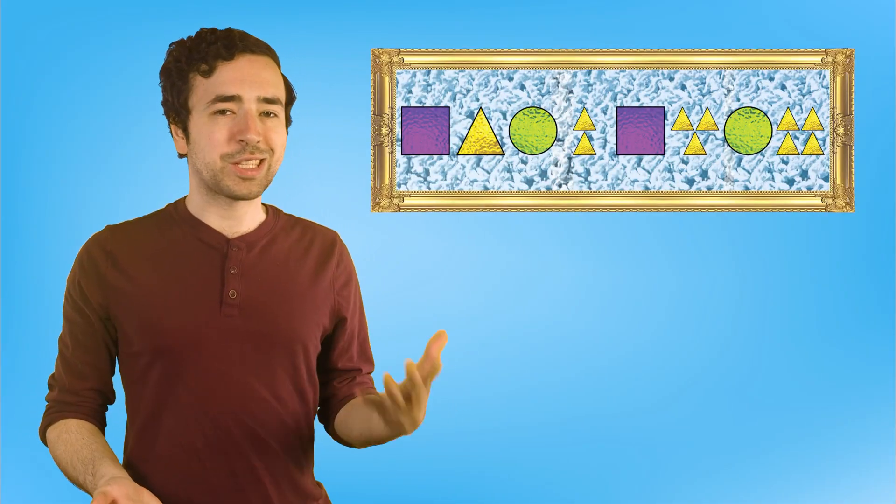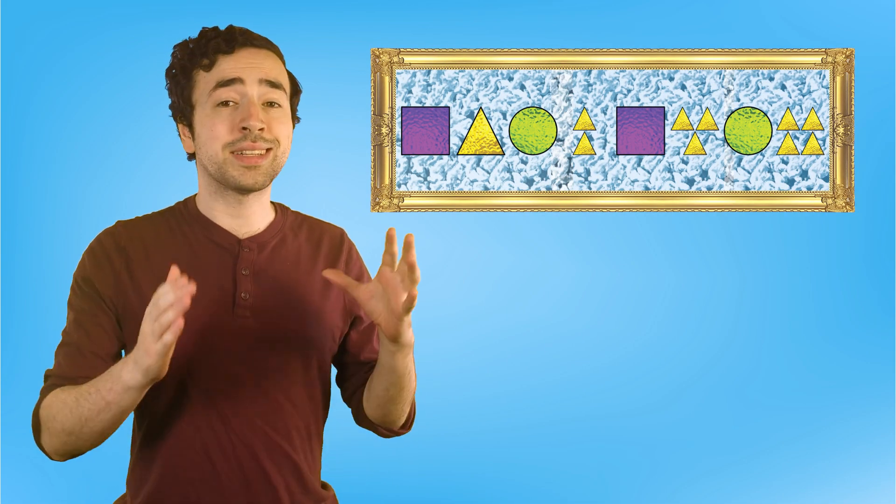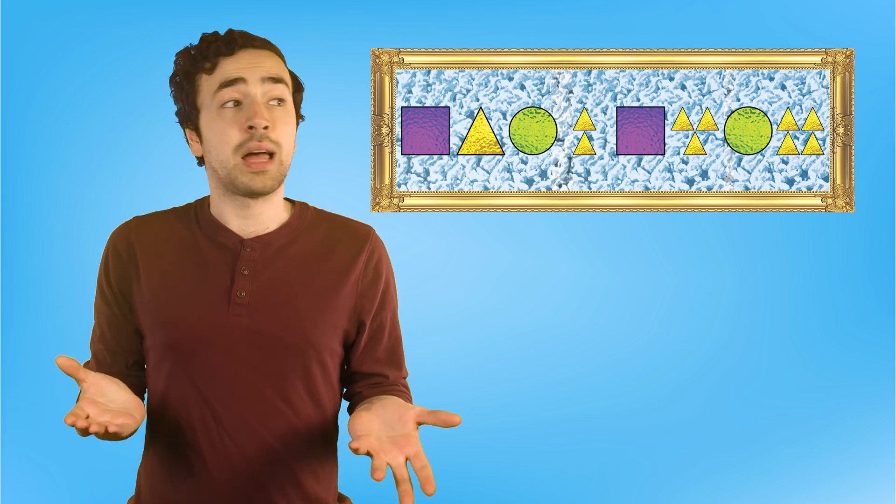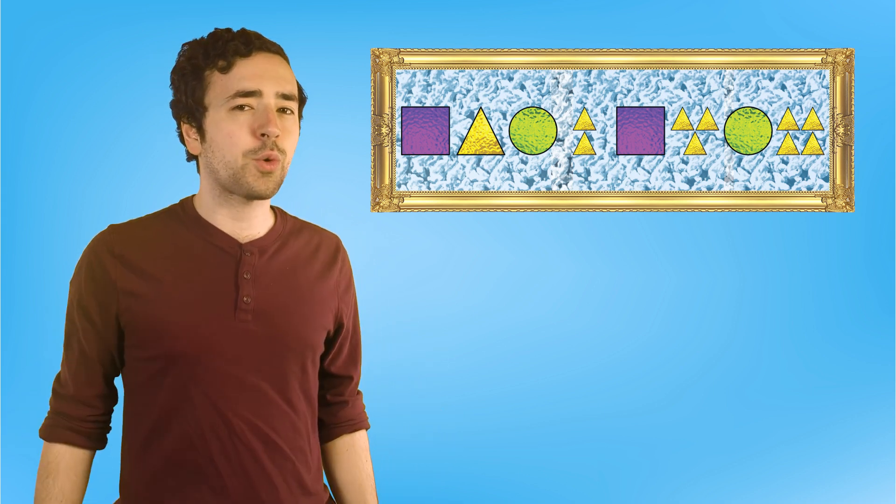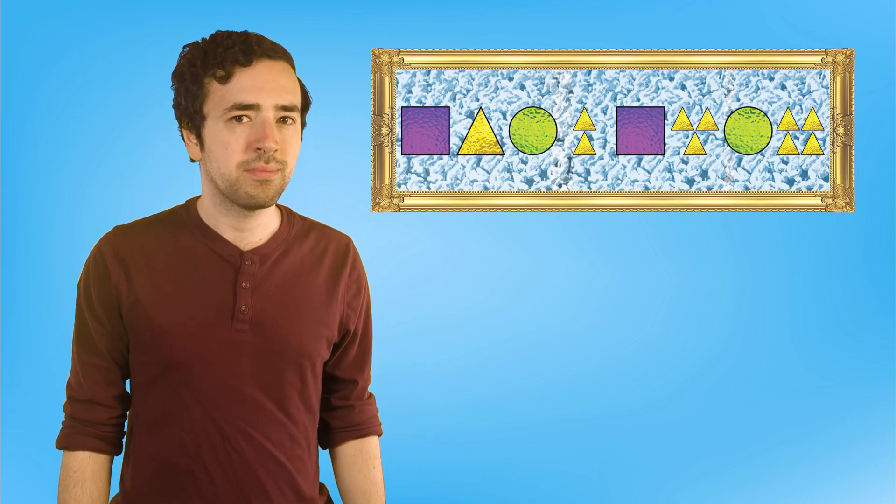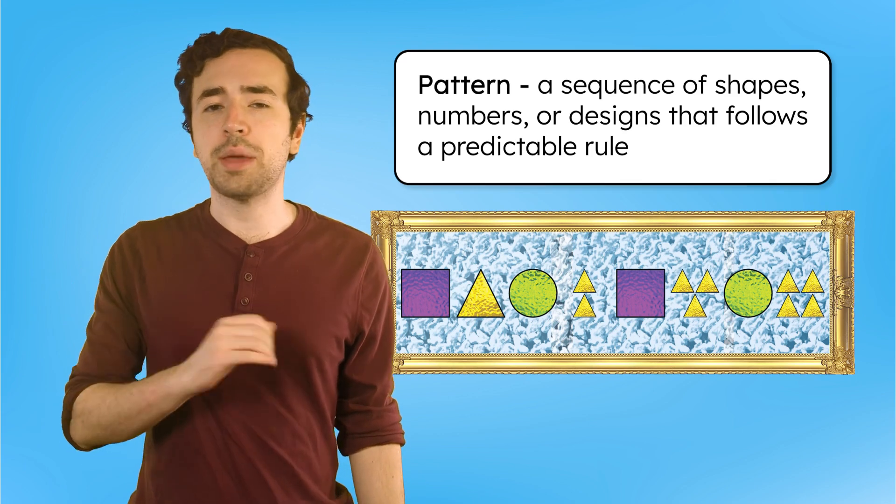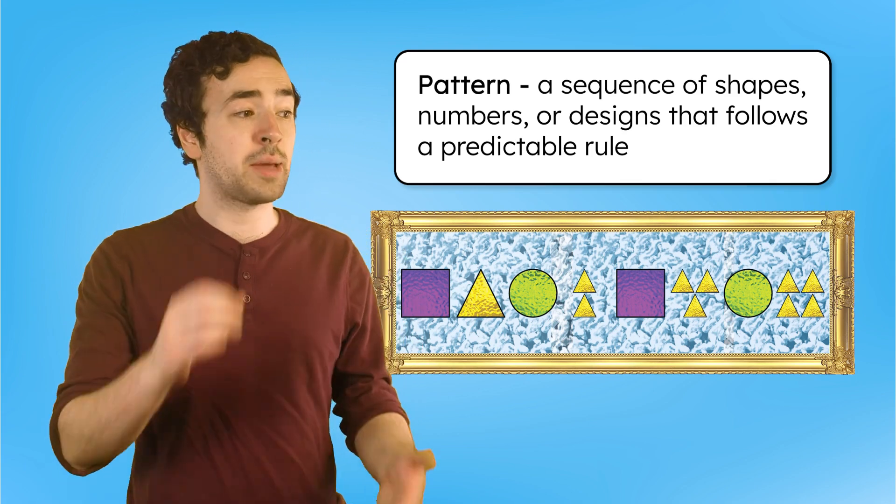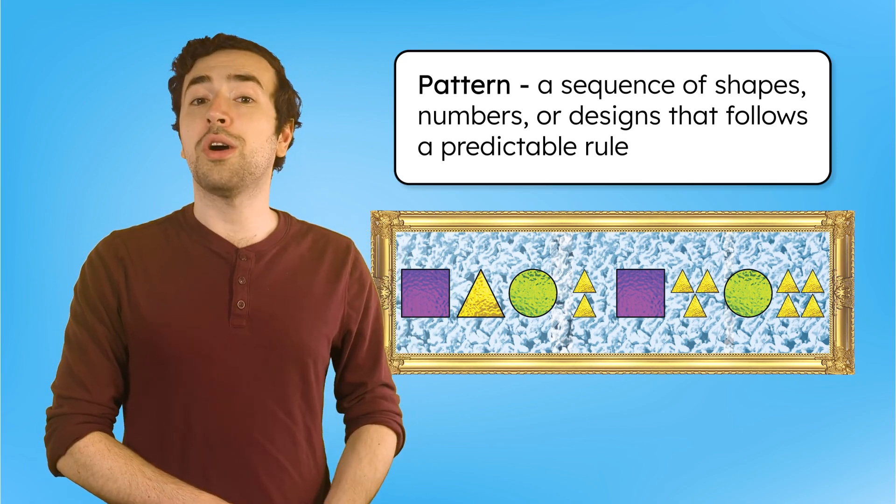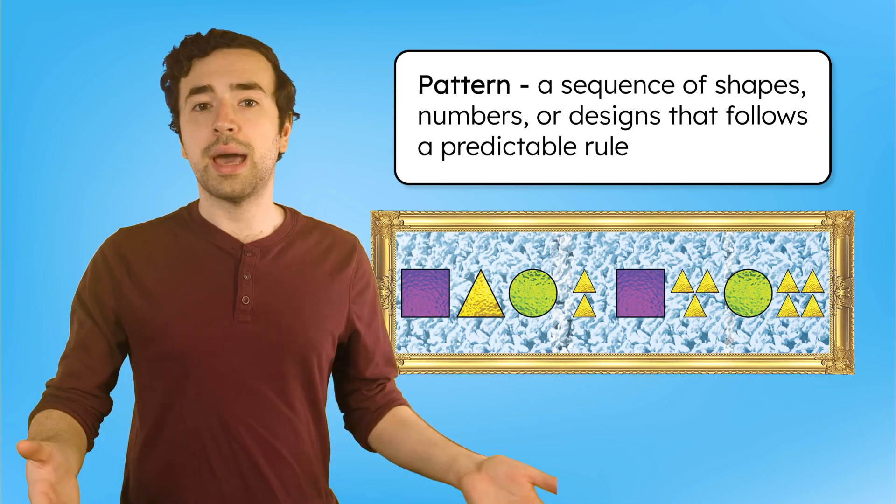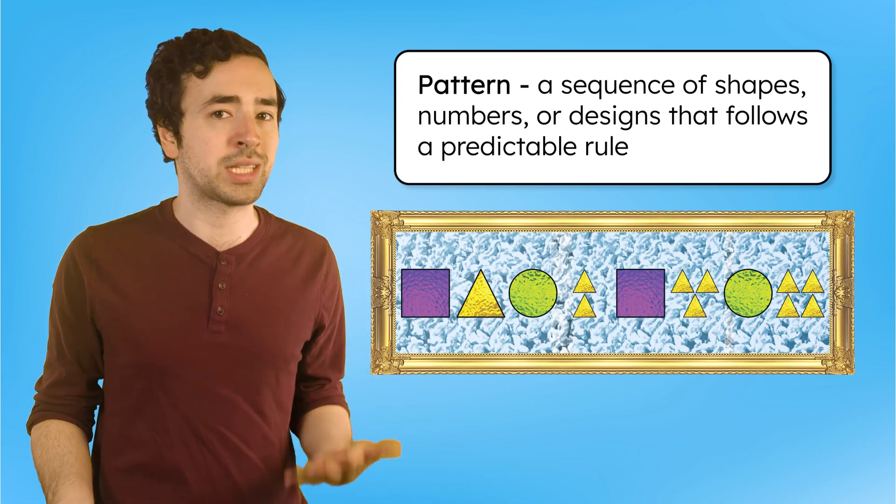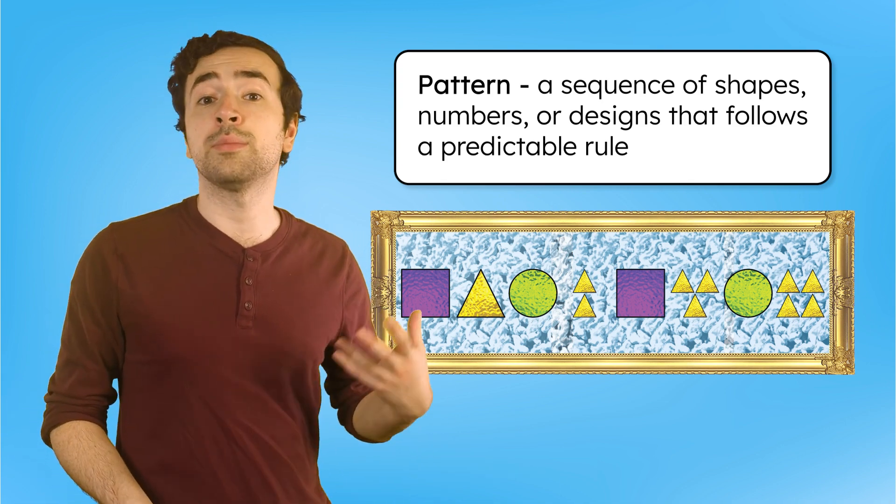When something repeats in a certain way or changes in a steady way, like the stained glass in the gallery, how can we describe what's happening? When a sequence of shapes, numbers, or designs follows a predictable rule, we call it a pattern. In math, patterns help us understand what's happening and figure out what comes next.